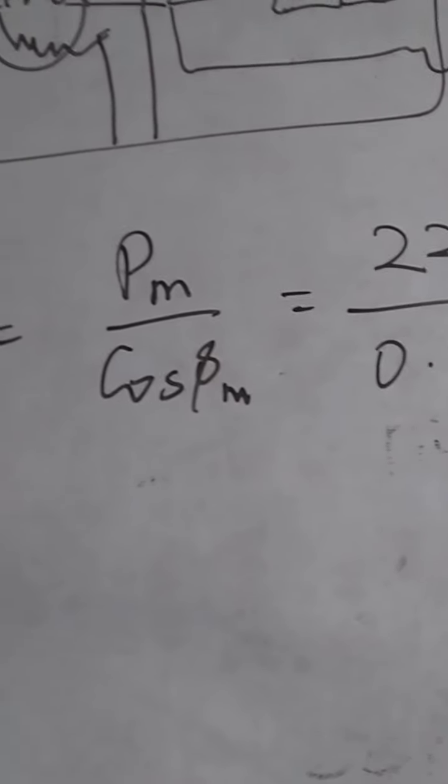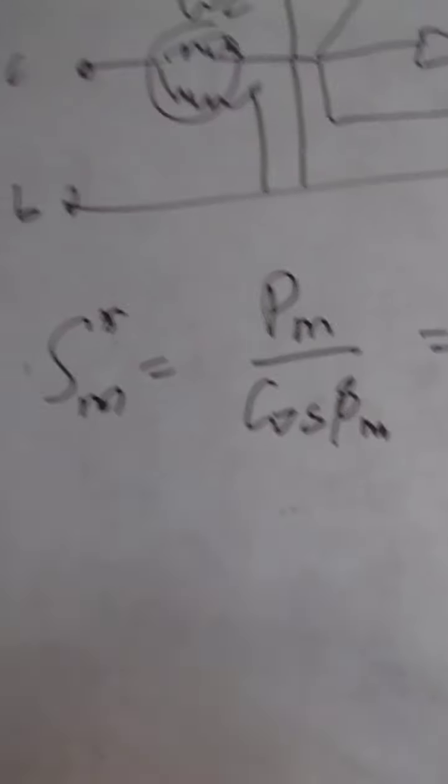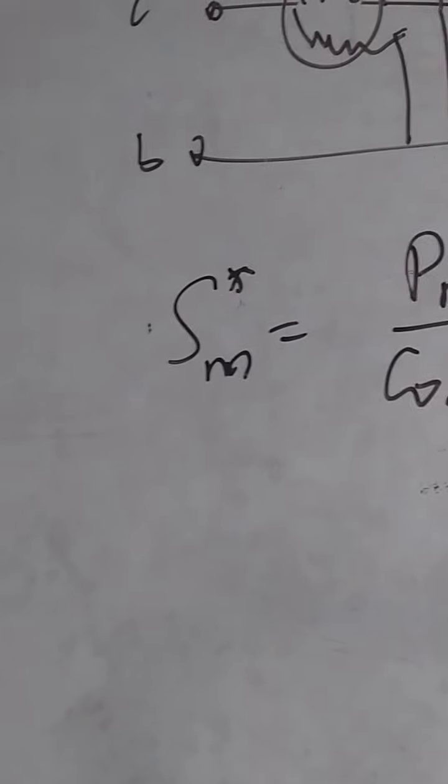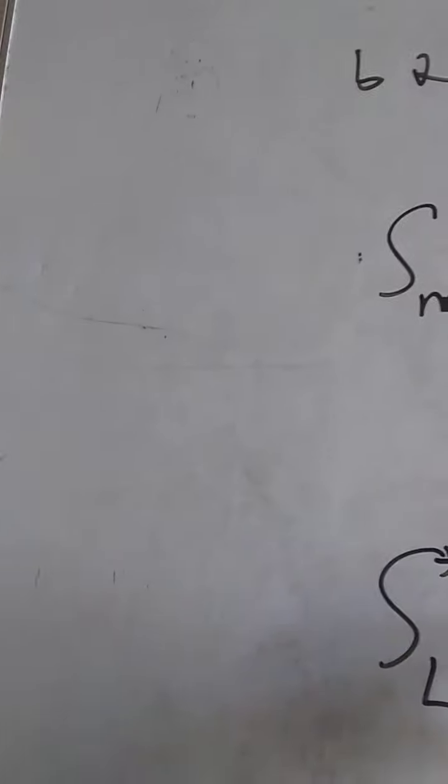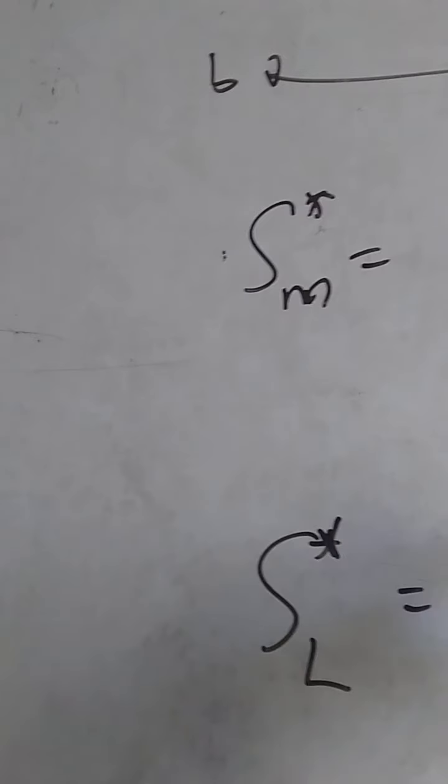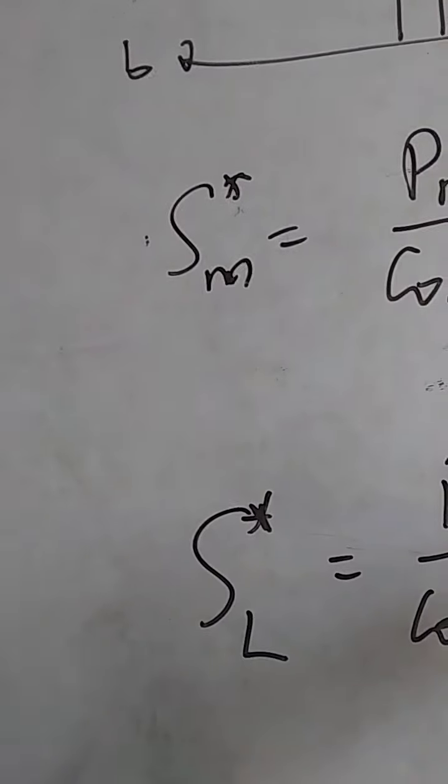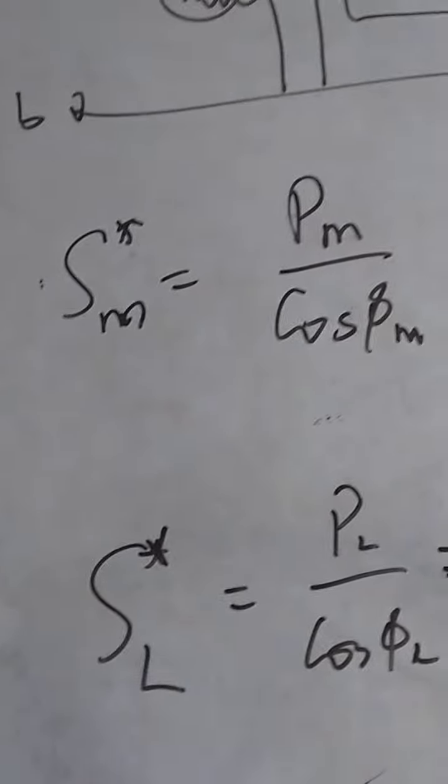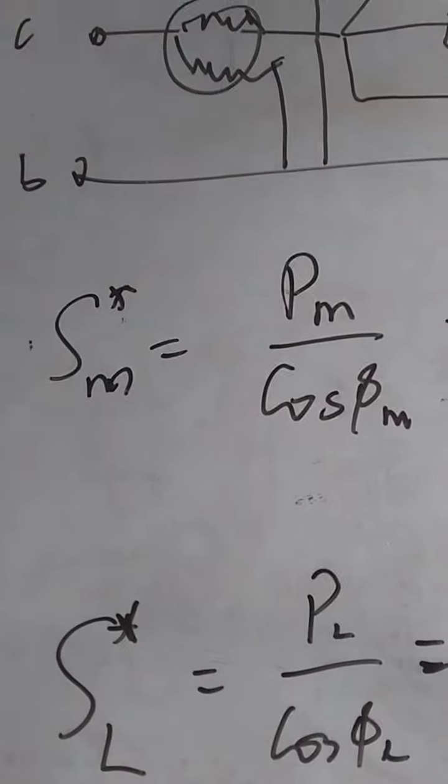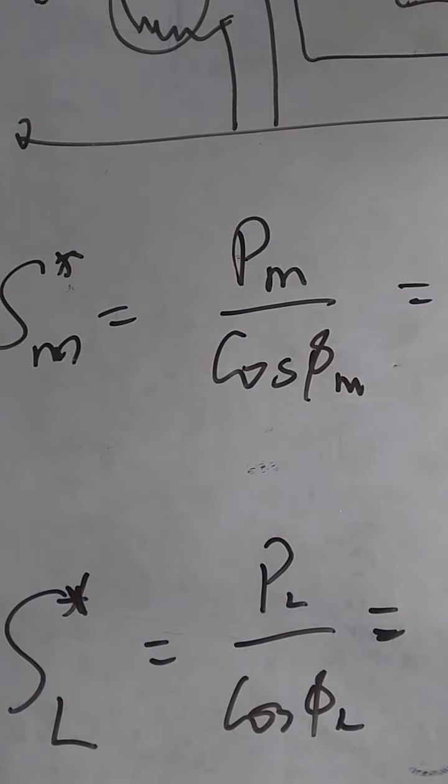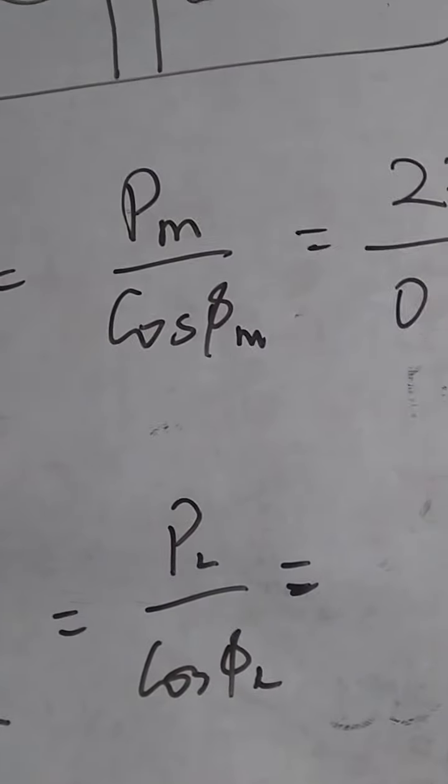Then we need to know the capacity of the other additional load that is connected in star. And that also, for the additional load that is connected in star, is what is P load by cos phi load. What is the P load?